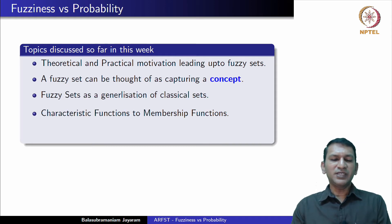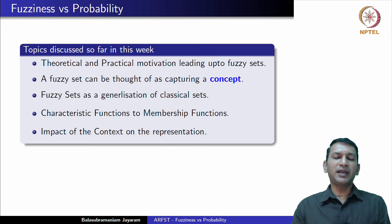We have seen fuzzy sets as a generalization of classical sets, essentially moving from the characteristic function which was a function from the domain to the set with 0 and 1, to membership functions which is a mapping from the underlying domain to the entire unit interval 0,1. We have specifically seen the impact of the context on the representations that we can obtain.